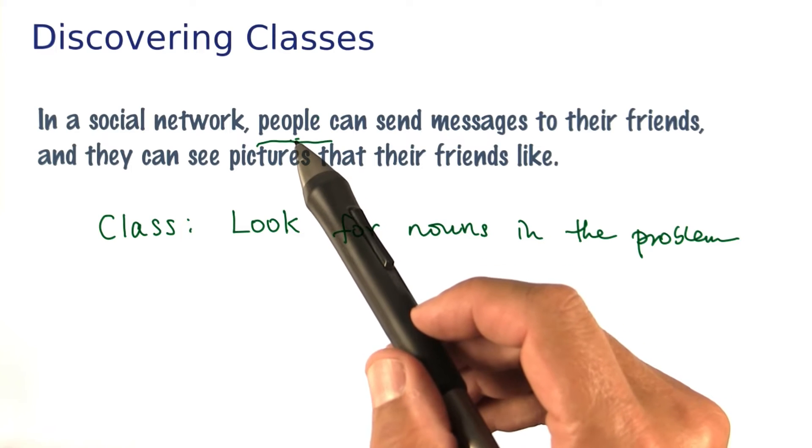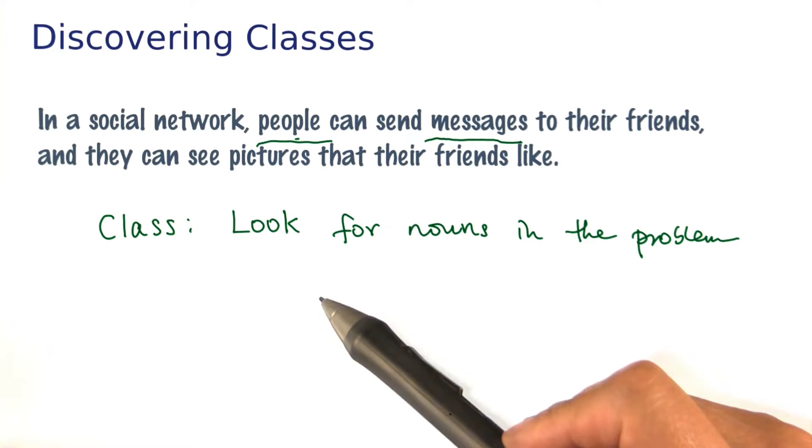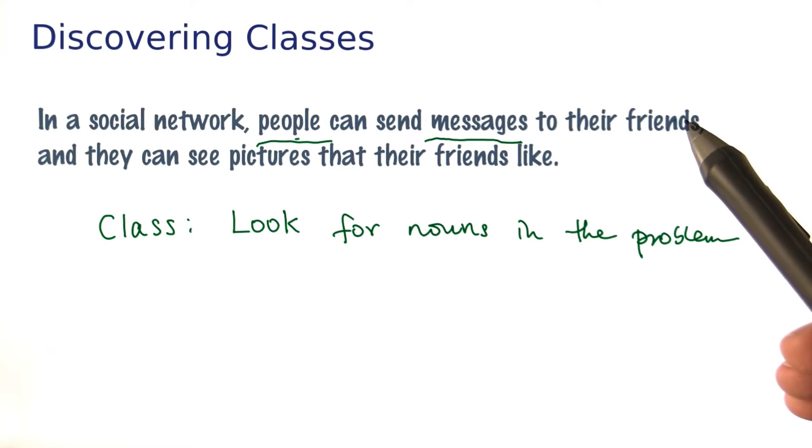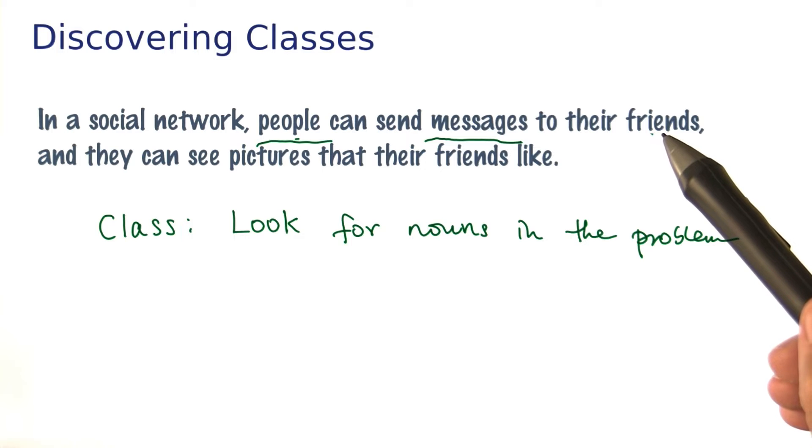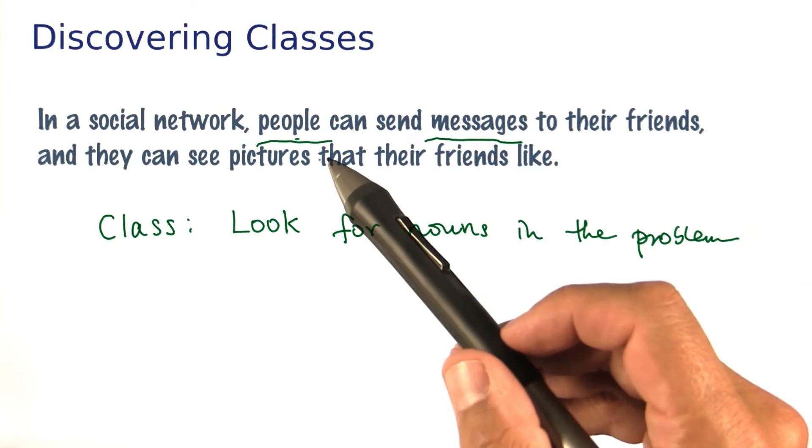So we might want to make a class person or message. What about friend? Well, a friend is just a kind of person, so we might not be using that one. So it's not that every noun turns into a class, but the nouns give us a good idea where to start.